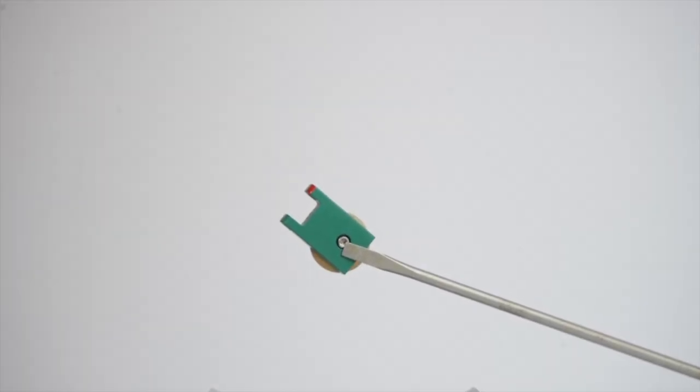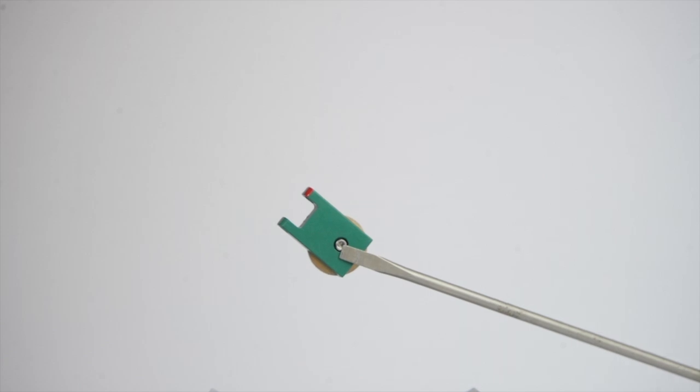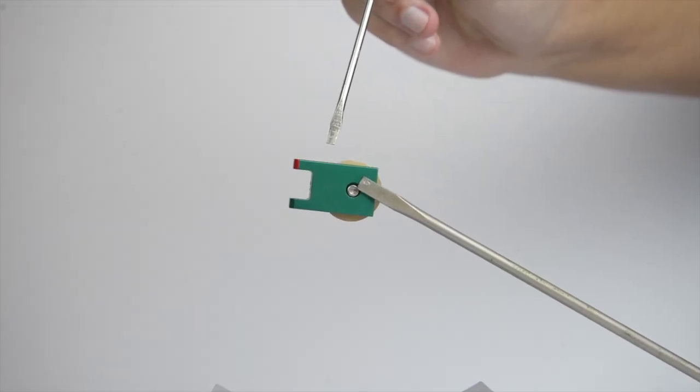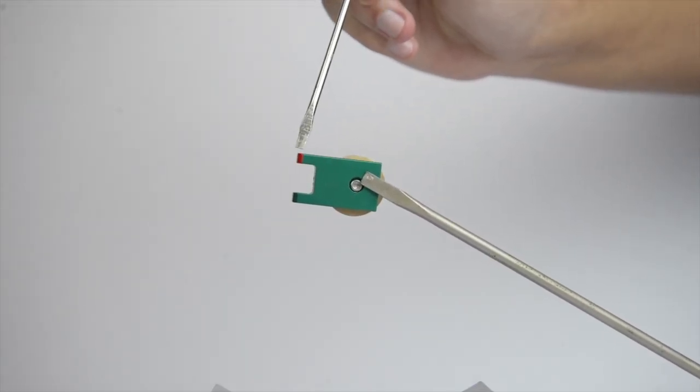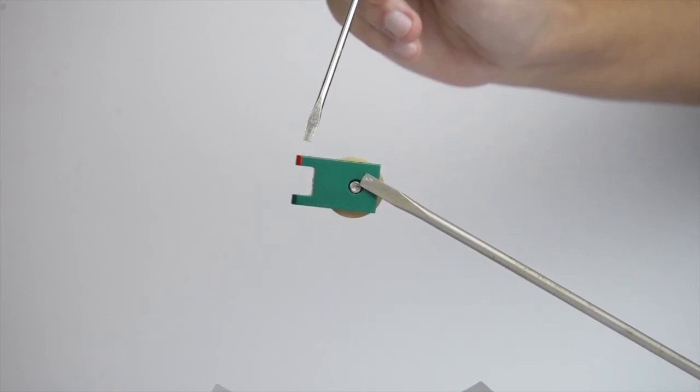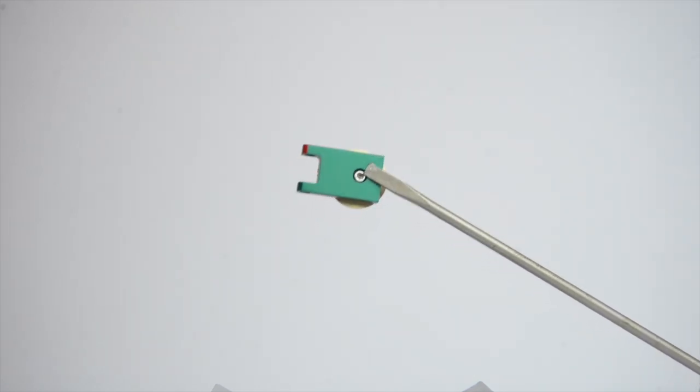We have removed a flapper from a 1 inch valve to illustrate what you are looking for. When the valve is in the open position, you are looking at this green portion of the valve. If you are seeing this bright red portion of the flapper, the valve is in the closed position and gas should not be flowing through the valve.